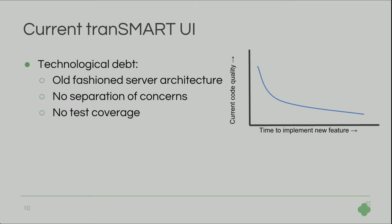A second problem that the current Transmart UI has is technological debt. It does not have a good testing framework, it has an old-fashioned server architecture, and there's no separation of concerns. So if you want to build new features, this becomes harder over time because code quality goes down. It takes longer to implement new features and will therefore be more expensive. There's also no test coverage for this UI.